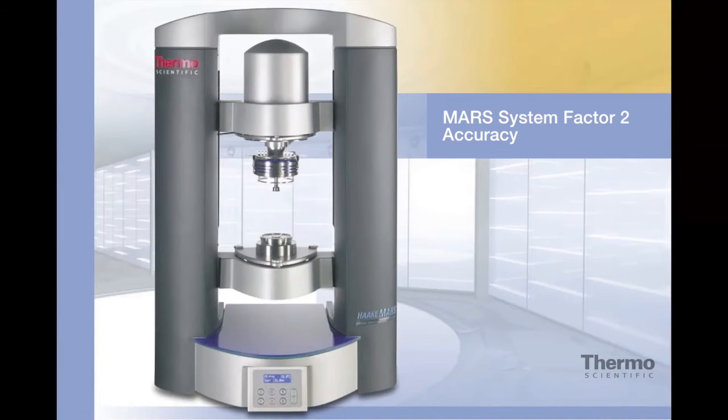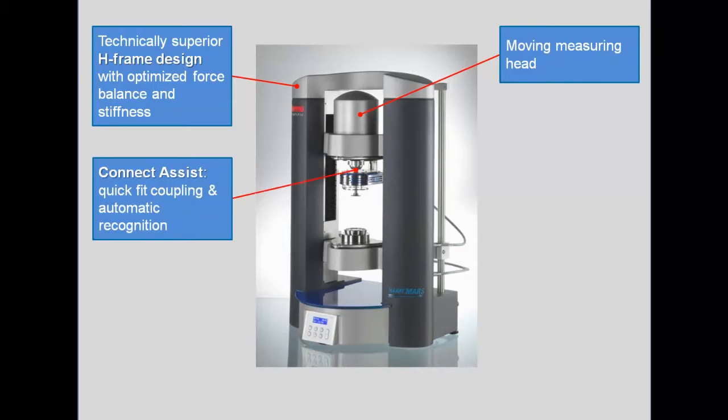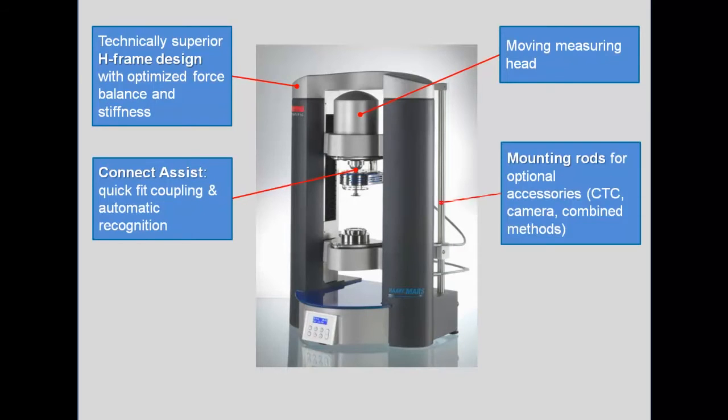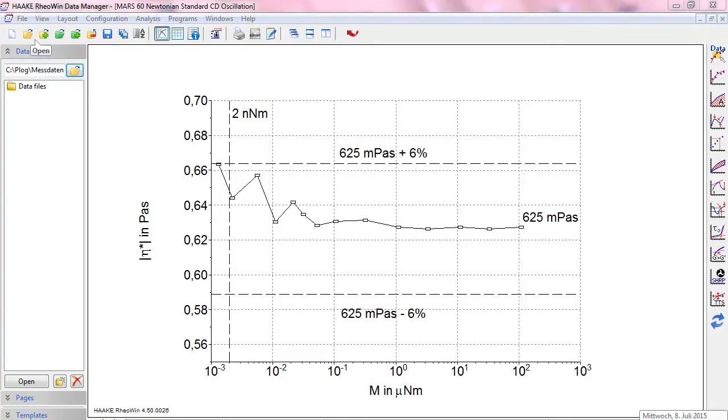Accuracy. The new MARS was designed to give you the highest level of accuracy through factors such as our superior A-frame design or the connect system with quick fit coupling and automatic rotor recognition or the ergonomic control panel status and display. With this we were able to push down the low torque limit to 0.5 micronewton meters as shown here.